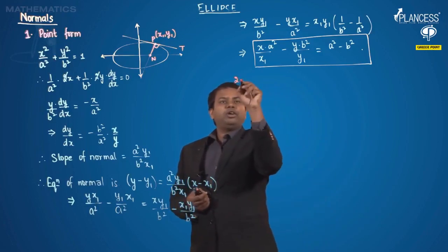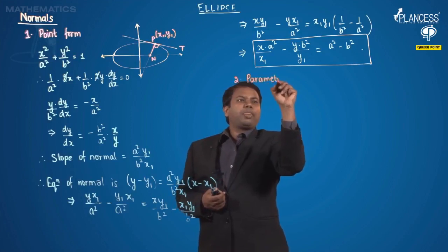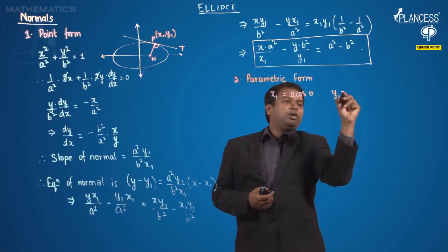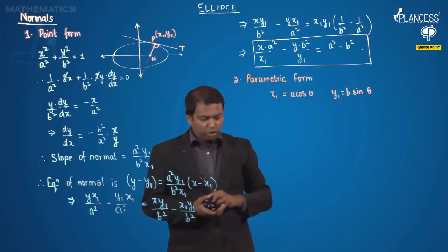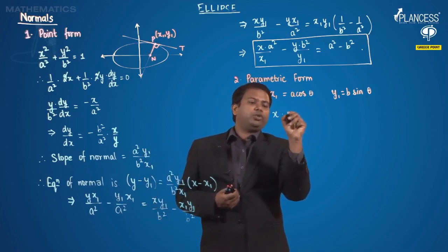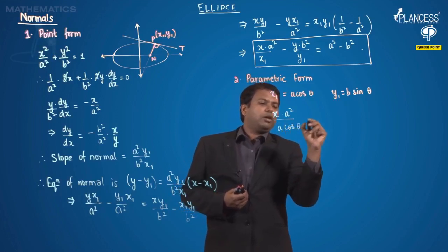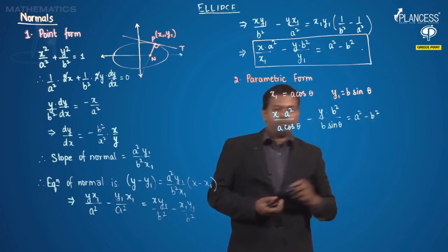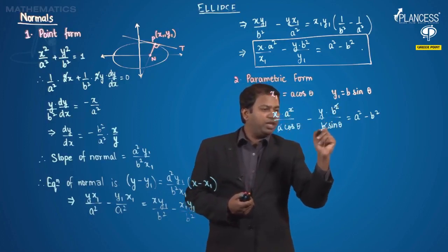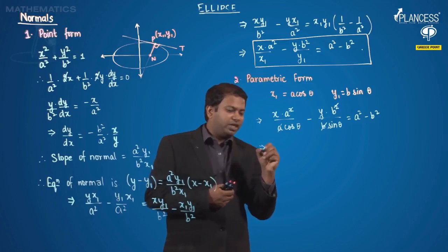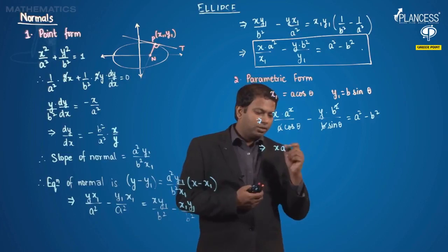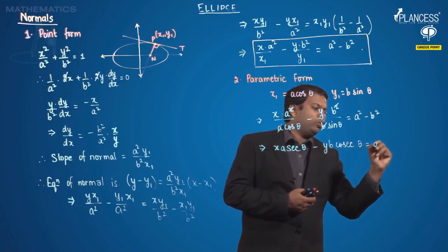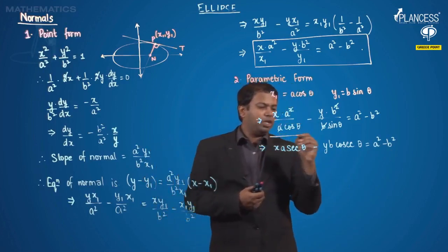We can also study the parametric form by substituting a·cosθ in place of x1 and b·sinθ in place of y1. Doing that gives: x·(a²)/(a·cosθ) − y·(b²)/(b·sinθ) = a² − b². Cancelling one factor of a and one factor of b from the respective terms, we are left with: x·a·secθ − y·b·cscθ = a² − b². This is the equation of the normal in parametric form.